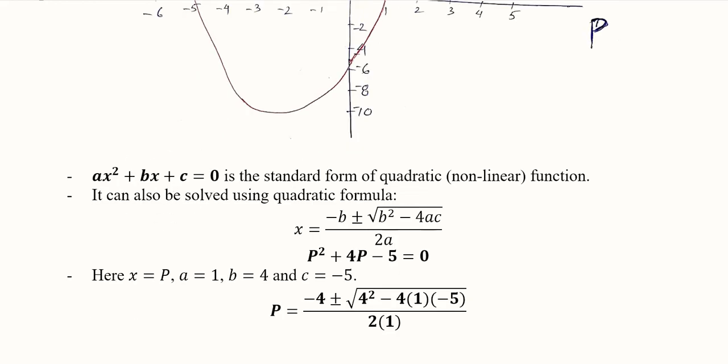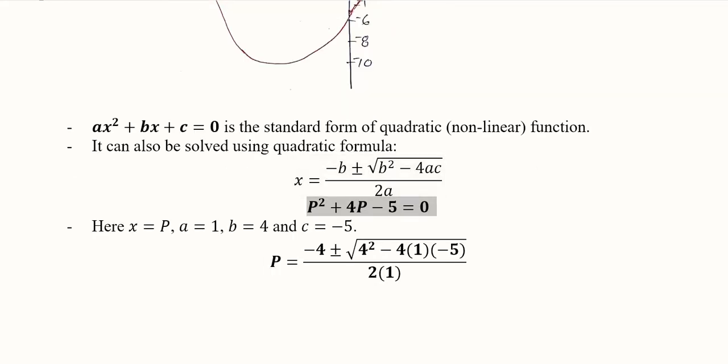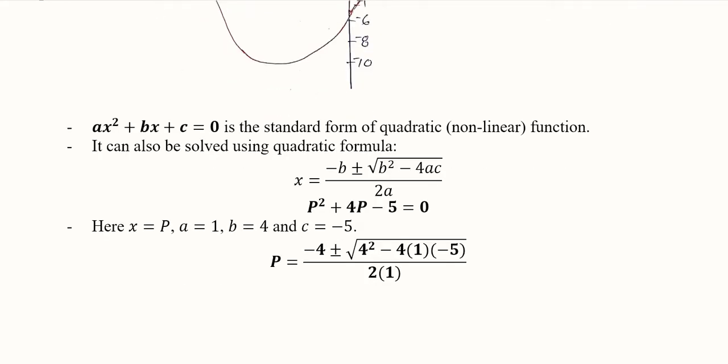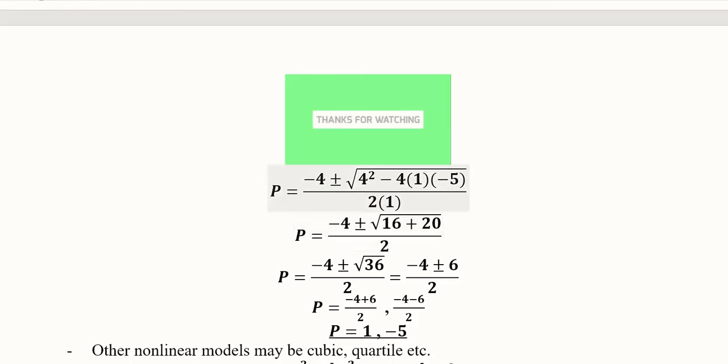Now we can consider this for the sake of solution. Here we are considering this supply function, and by using this supply function we are going to solve this. This is a quadratic formula which is applicable here. The value of a will be 1, the value of b will be 4, and the value of c will be minus 5.